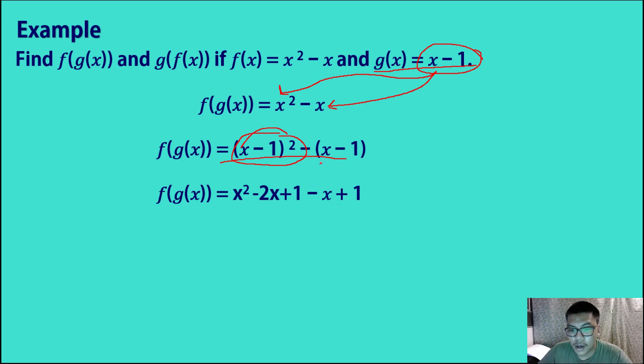And here, we have negative times positive, we have negative x. Negative times negative, we have positive 1. So simplifying this, we obtain x squared. So combining like terms, negative 3x plus, plus, 1 plus 1, we have 2. So ganun lang kadalay, ano?